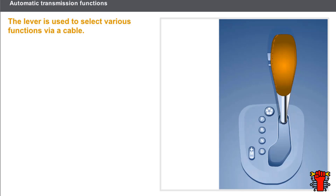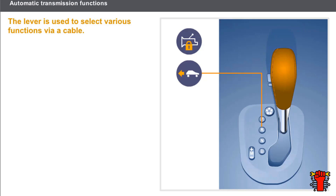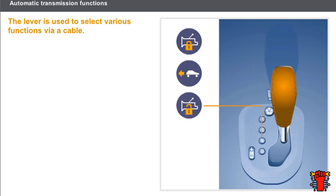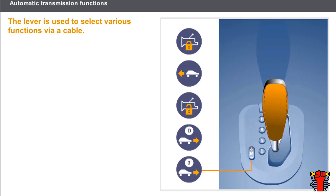The lever is used to select various functions via a cable. The Park function locks the gearbox mechanically. The Reverse function engages reverse gear. In the Neutral position, no torque is transmitted at normal idle speed — the engine does not drive the gearbox. Drive is the position for the gearbox to operate in automatic mode. The sequential shift controls are used in manual mode to select a higher or lower gear ratio, provided the engine can accept it. It may also be possible to obtain rapid engine braking by engaging a lower gear.